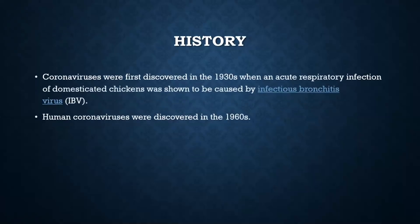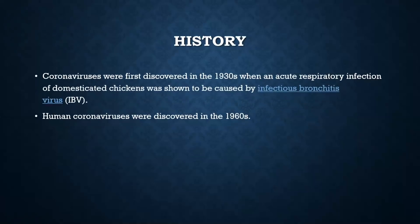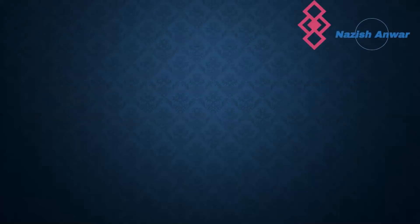Some history. Coronaviruses were first discovered in the 1930s, when an acute respiratory infection of domesticated chickens was shown to be caused by infectious bronchitis virus, known as IBV. Human coronaviruses were discovered in the 1960s.